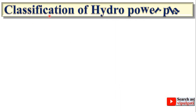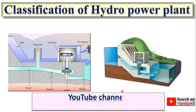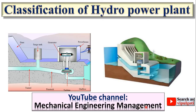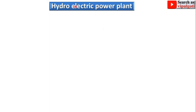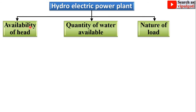Today we are going to discuss the classification of hydropower plants. Generally, a hydroelectric power plant is classified into three different categories: first, according to availability of head; second, according to quantity of water available; and third, according to nature of load.